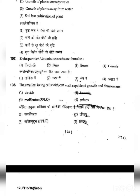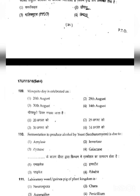Question 108: The smallest living cells with a cell wall capable of growth and division are — normally we know the smallest living cell without a cell wall is Mycoplasma or PPLO. But this question specifically asks for cells that have a cell wall and are capable of growth and division. So the answer is Bacteria — the smallest living cells that have a cell wall and can grow and divide. The correct answer for 108 is Bacteria.